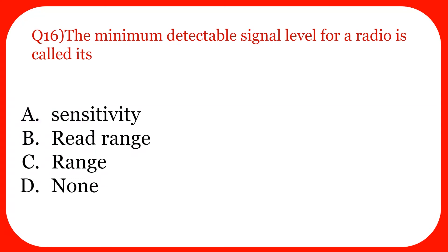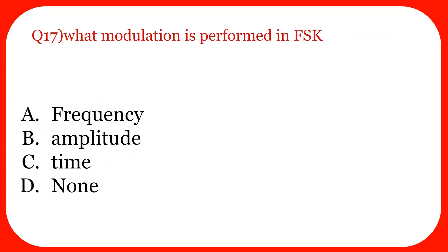Question sixteen: The minimum detectable signal level for a radio is called its sensitivity, read range, range, or none? The answer is sensitivity — it refers to the minimum detectable signal level. Question seventeen: What modulation is performed in FSK? FSK is frequency shifting keying. Depending on the message to send, we shift the frequency — high frequency is considered binary one, low or no frequency is binary zero. In ASK, we change the amplitude of the wave instead.